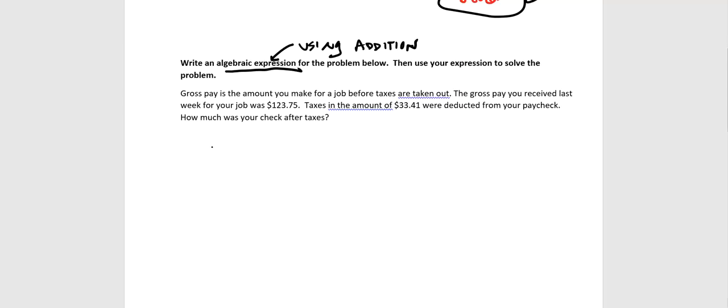It says your gross pay is the amount you make for a job before taxes are taken out. So when you work for a job, ultimately taxes are taken out. But the gross pay is before those taxes are tracked. The gross pay you received last week for a job was $123.75. That's actual money in your pocket. So that should be understood to be a positive number. Taxes in the amount of $33.41 were deducted. Now, deducted means subtracted. That means subtracted. So that's going to be a negative number from your paycheck. How much was your check after the deductions?